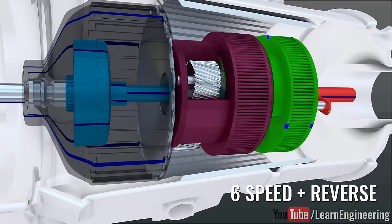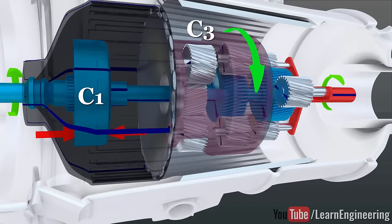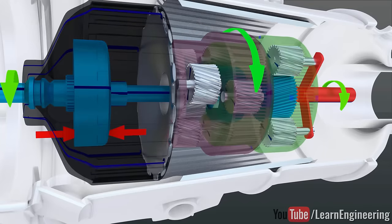The beauty of the automatic transmission is that by engaging the proper two clutch packs, we can achieve different output speeds. Now, let's compare these two technologies directly.